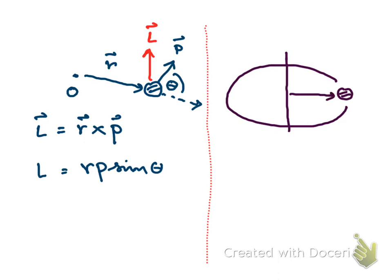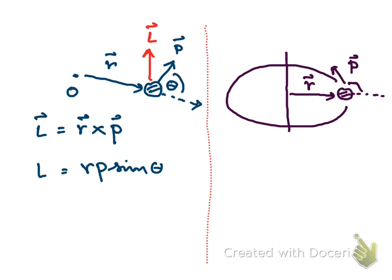The object moves with linear momentum P. Since the object moves in a circular path about this axis, we only have the tangential component of the momentum, because the object cannot move away from the axis. So the position vector and momentum will always be perpendicular in this case, meaning the angle theta will always be equal to 90 degrees, or pi over 2.